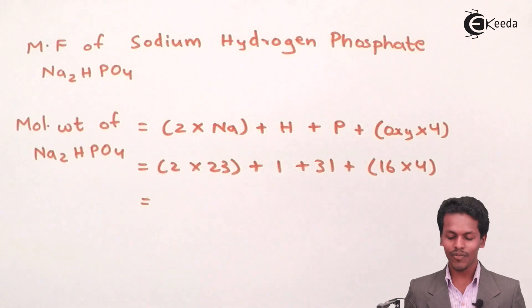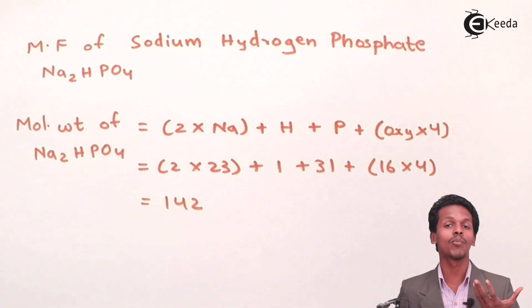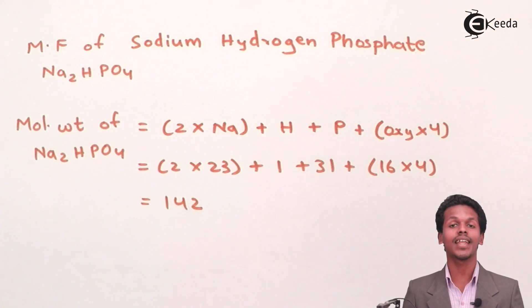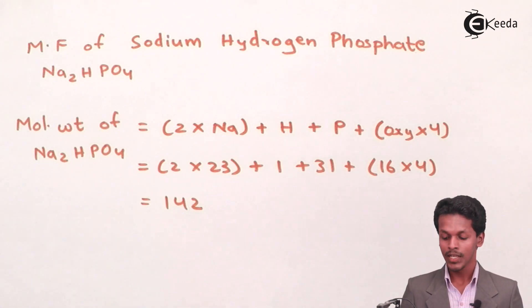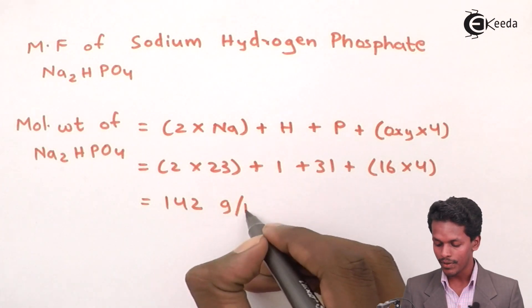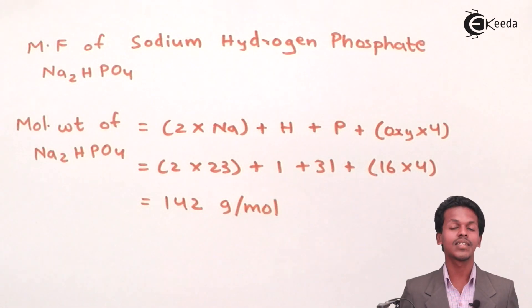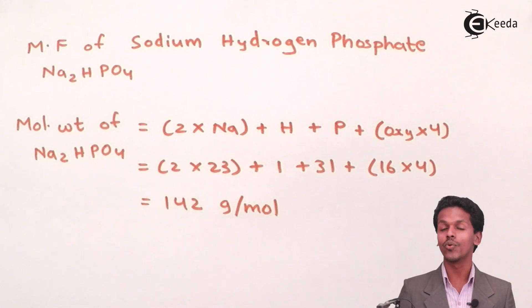The answer we get is 142 gram per mole. This is the molecular weight of Na₂HPO₄.